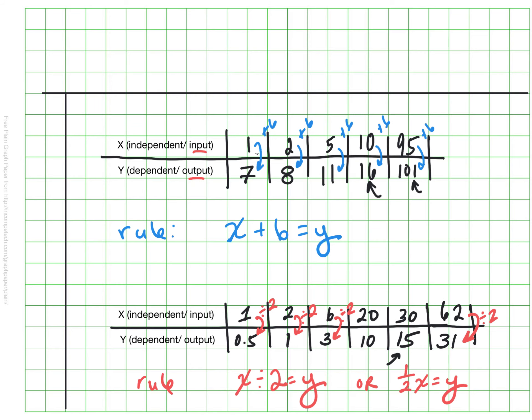It looks like the rule here would be that we're taking our X value and dividing it by two to get our Y value. And you can see I've written that in two different ways here. X divided by two equals Y. Or you could say one half of X equals Y. Both will work.